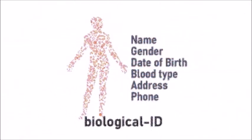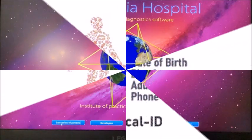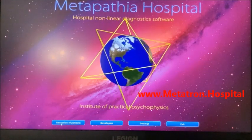Required information that determines your Quantum ID are name, gender, date of birth, blood type, address, and phone.